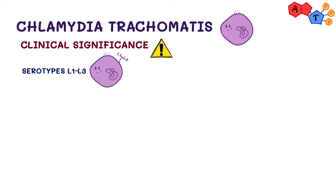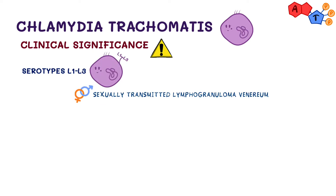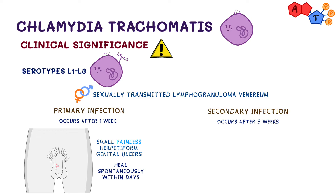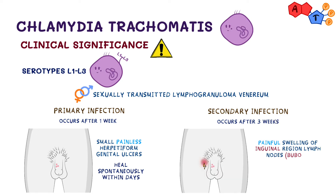Lastly, serotypes L1 to L3 lead to sexually transmitted lymphogranuloma venereum. The disease presents with a primary and a secondary infection. The primary infection, occurring after approximately one week, presents with small painless genital ulcers that are herpetiform and heal spontaneously within a few days. The secondary infection, taking place approximately three weeks later, presents with painful swelling of the lymph nodes in the inguinal region, known as buboes, with abscess formation and systemic symptoms.